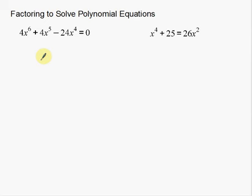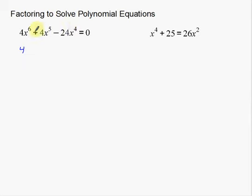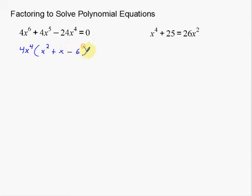Whenever you look at an equation like this, you want to figure out if anything is in common. Looking at this equation, I see a 4, a 4, and a negative 24 — all those numbers are divisible by 4. I also see that every single term has at least x to the 4th. So I'm going to factor out a 4 and an x to the 4th, which leaves me x squared plus x minus 6 equals 0.